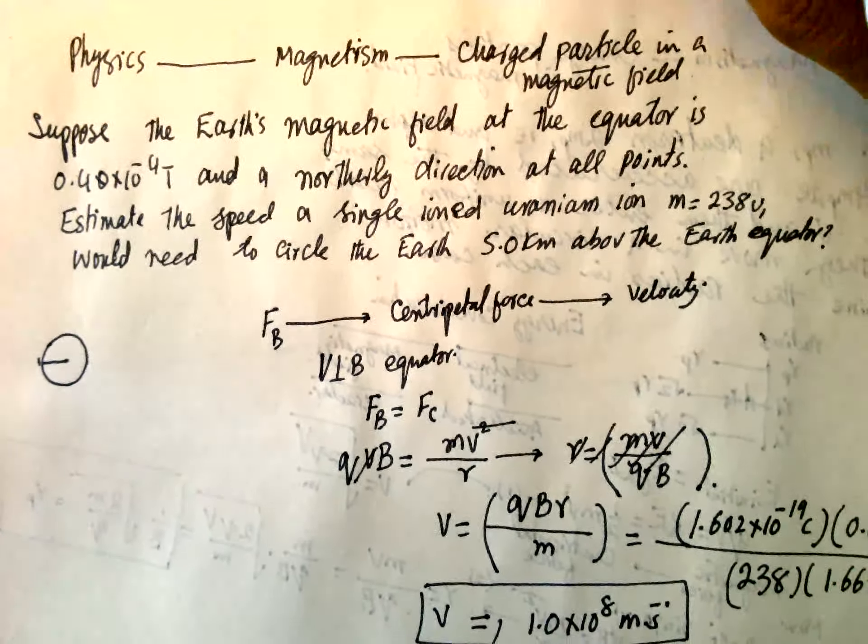So magnetic force, there will be a magnetic force and that will create a centripetal force. And from there we can find out the velocity.